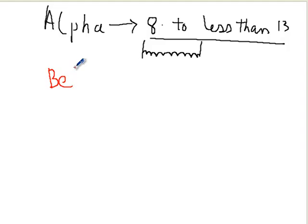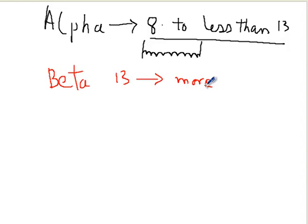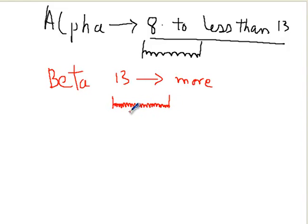If the frequency is 13 or more, you call it a beta frequency. So if these two lines are separated by one second, and you see very tiny waves, and if you count these waves and there are more than 13 waves in that one second, you call this a beta frequency.